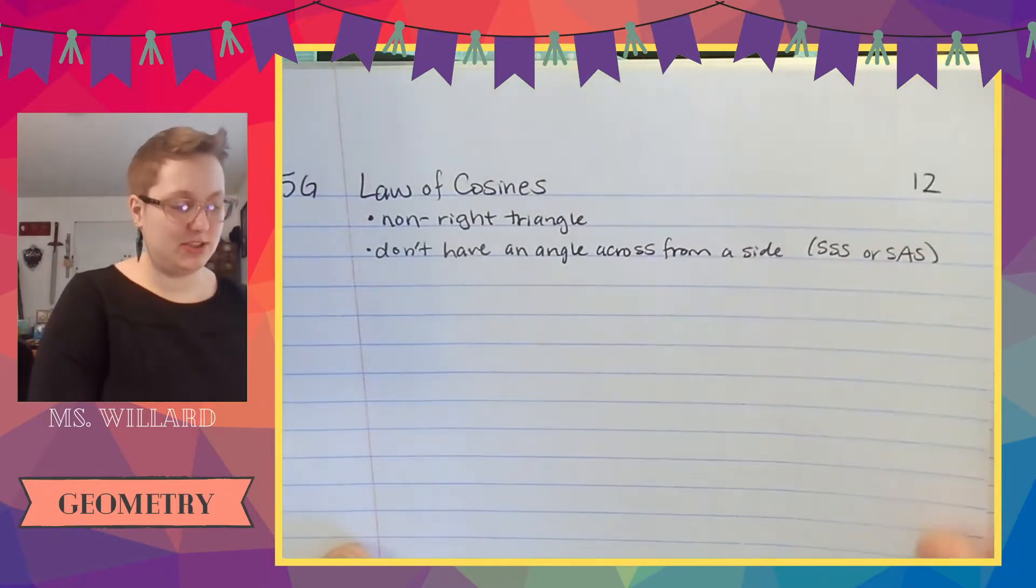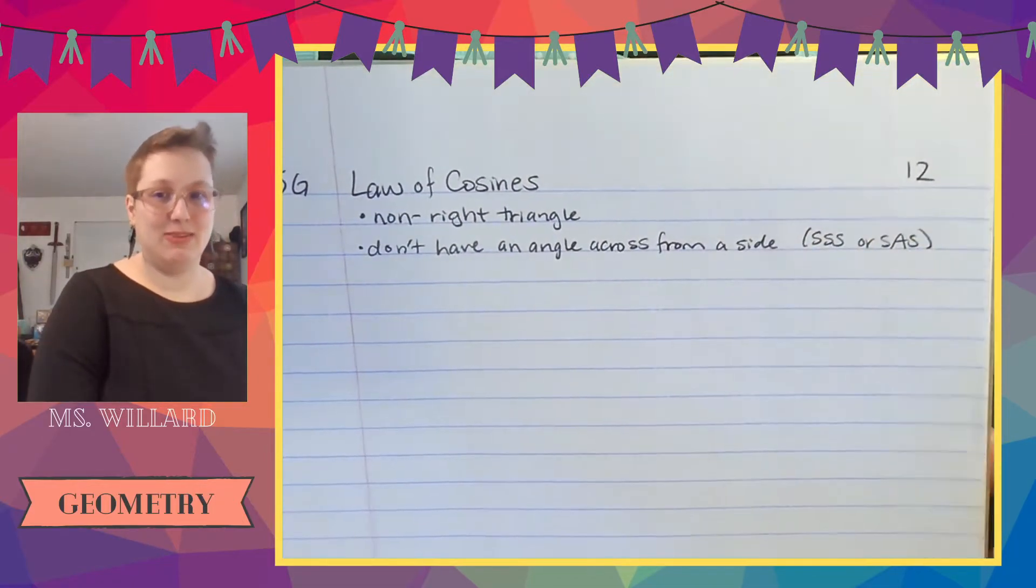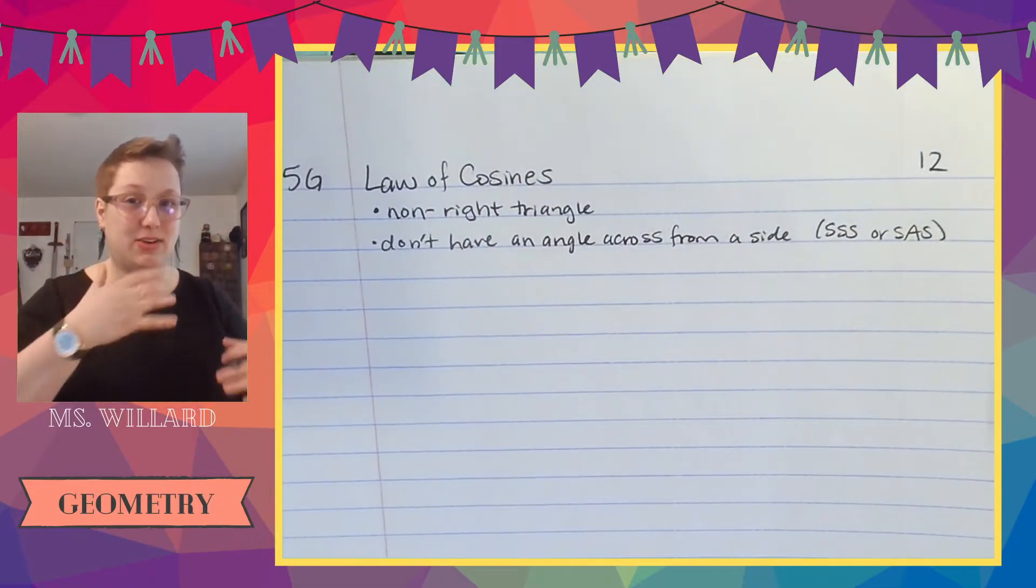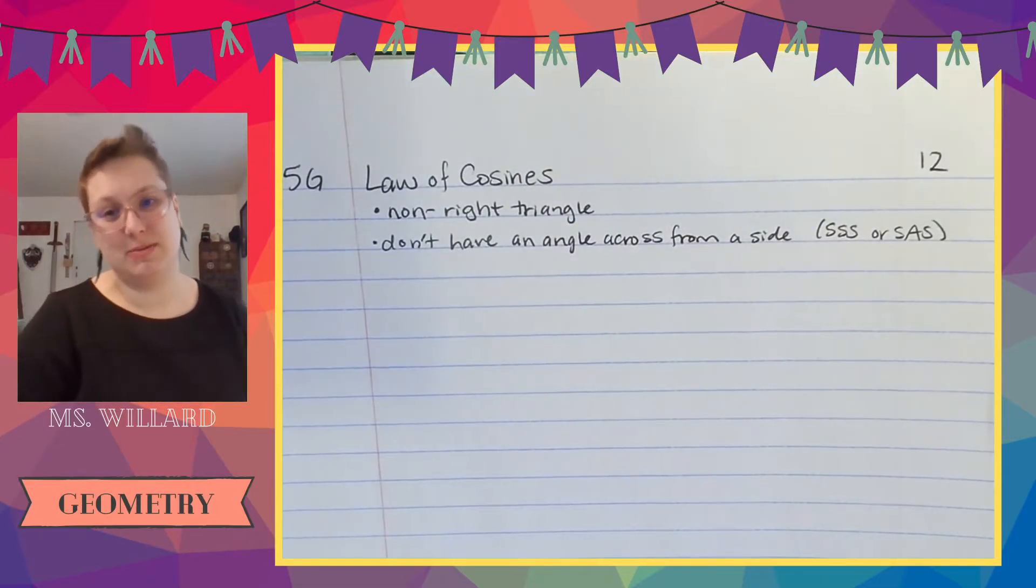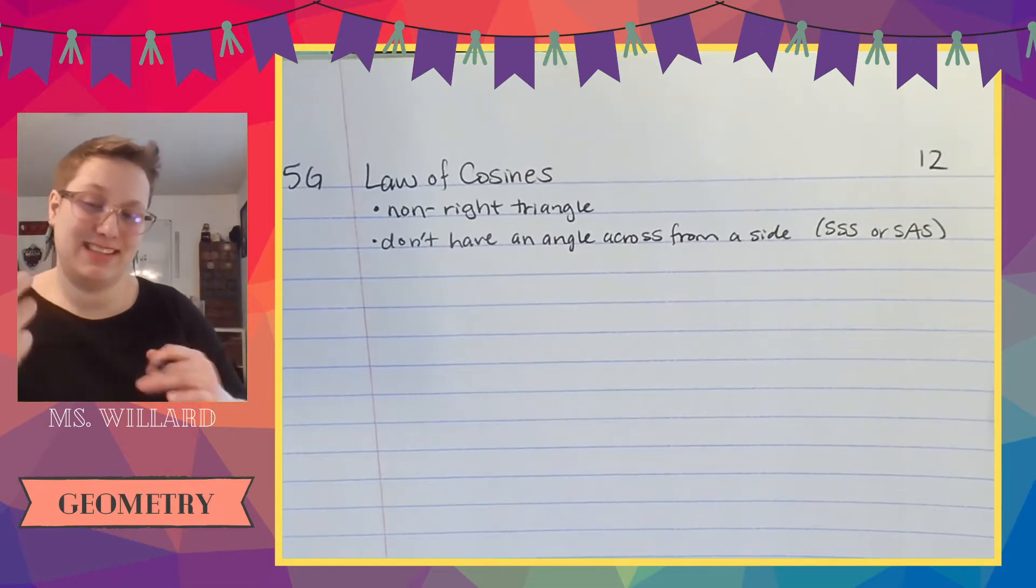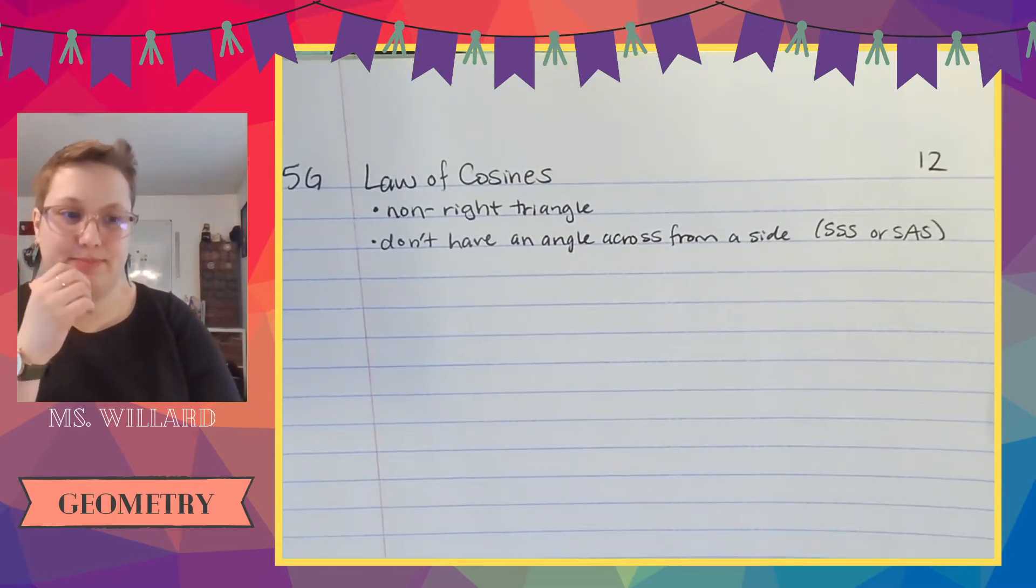Here's the law of cosines. It works for non-right triangles, just like law of sines. But when law of sines, you did know an angle across from the side, the law of cosines, you're not going to know the angle across from a side. So this is where you have side, side, side, or side angle side.